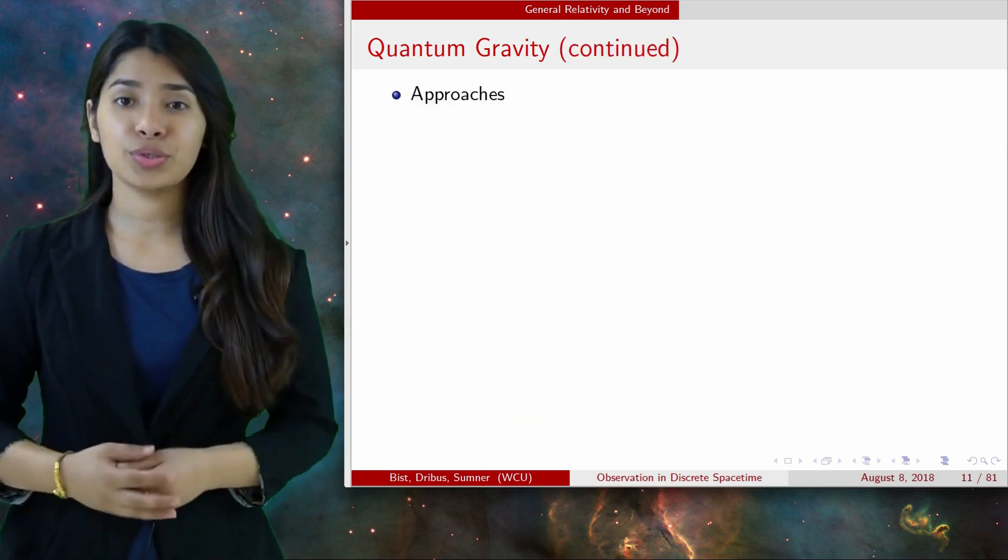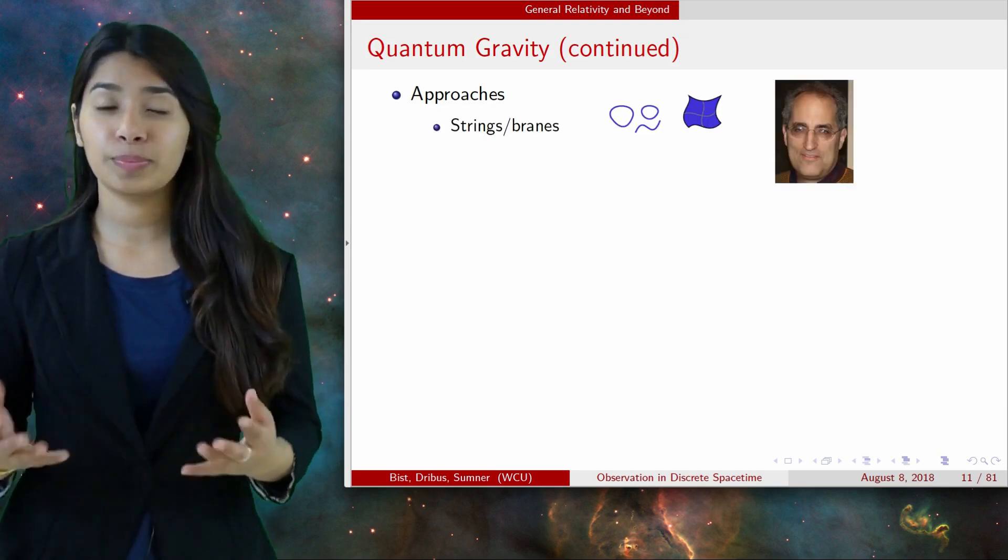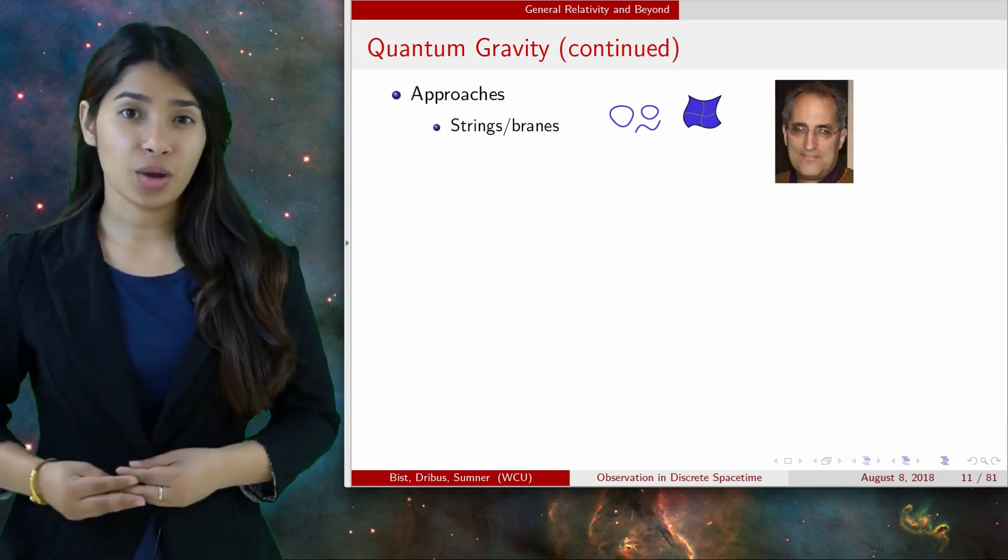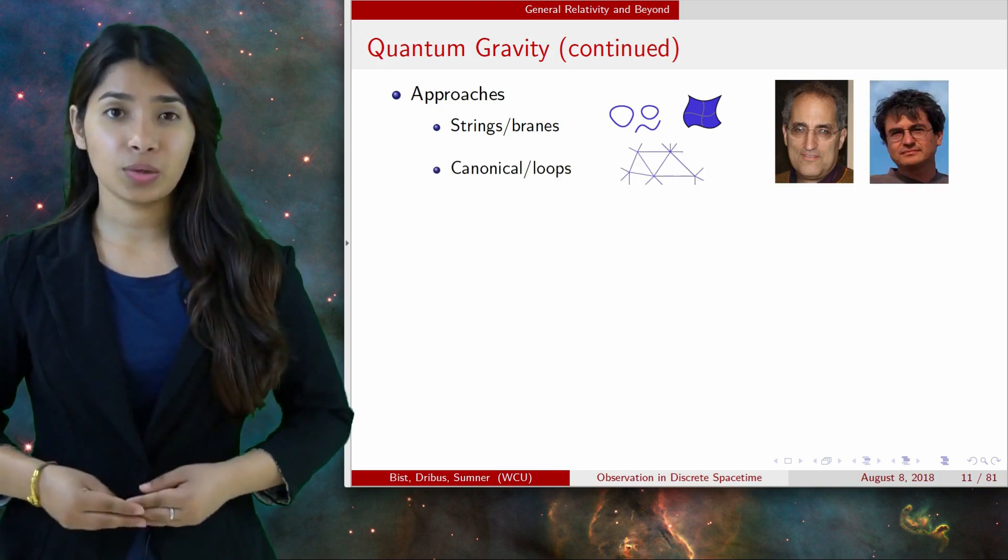So what are the main approaches to quantum gravity? Well, the most popular is super-string theory or M-theory, which replaces particles with extended objects like strings or membranes. The second most popular is canonical quantization, which includes loop quantum gravity.